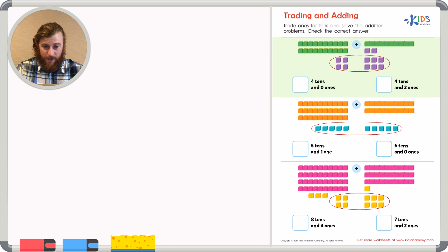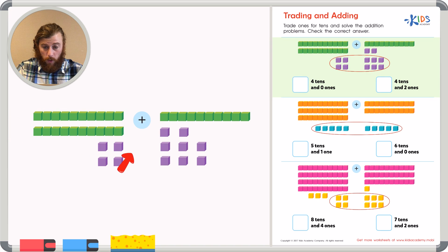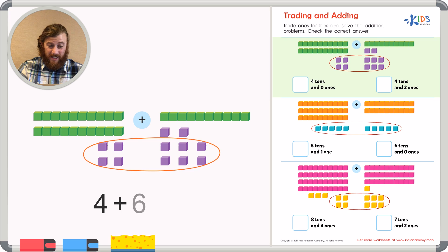In our first problem, I have two tens and four ones plus one ten and eight ones. My goal is to use the cubes and trade ten cubes for one ten. So I'm going to take the four cubes on the left side and add them to six of the cubes on the right side. I know that four plus six equals ten.